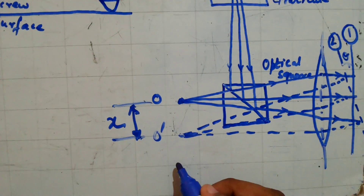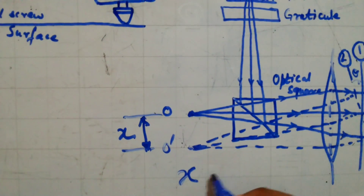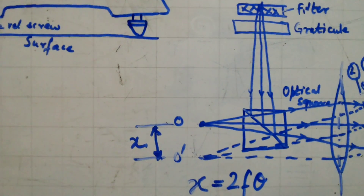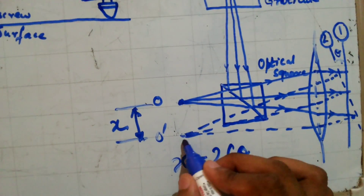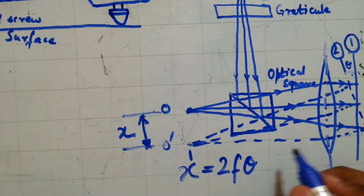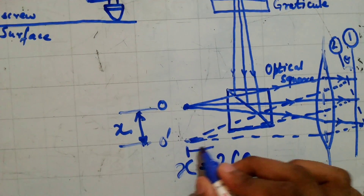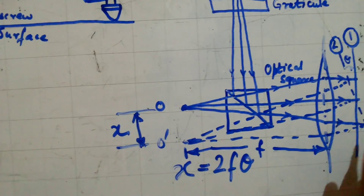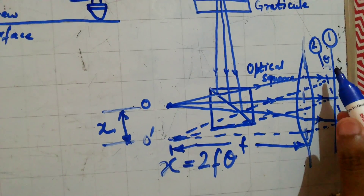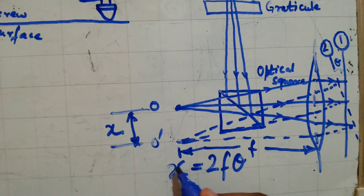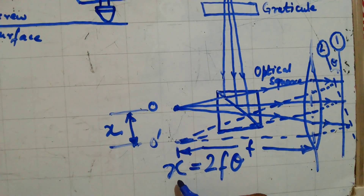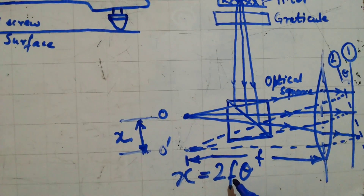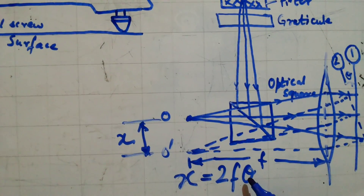You can find X using the formula: X is equal to 2 F theta. The distance from the collimating lens is the focal distance F, and theta is the angle by which the reflector is tilted. X is the distance between O and O dash, F is the focal distance, and theta is the angle of tilt.